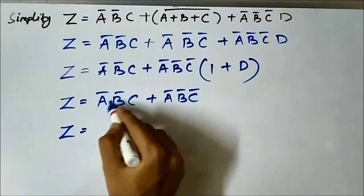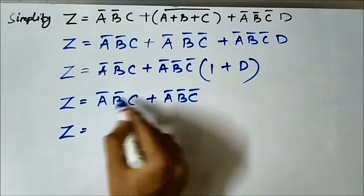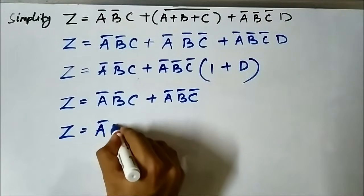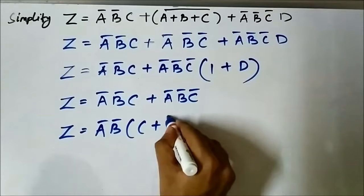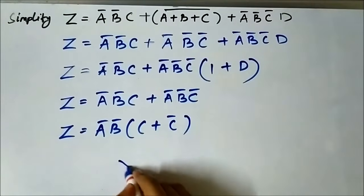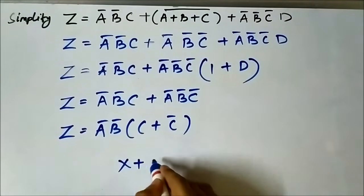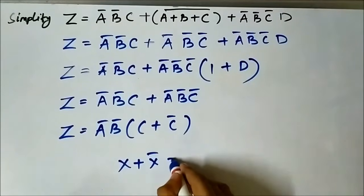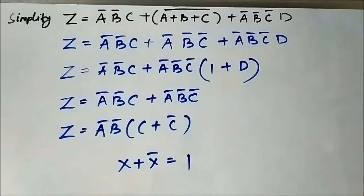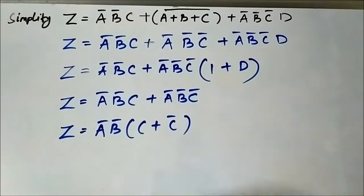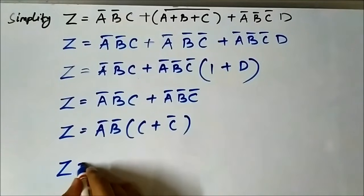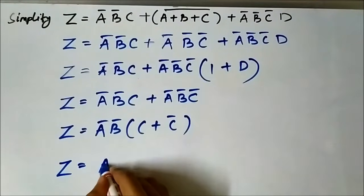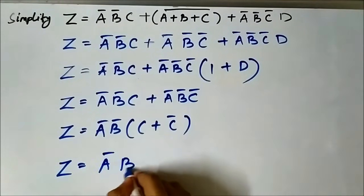In these two Boolean terms, ā·b̄ is common. So it will be ā·b̄·(c + c̄). We have the Boolean rule that any Boolean variable OR'd with its complement gives 1. So c + c̄ will be 1, and this finally becomes z equals ā·b̄.